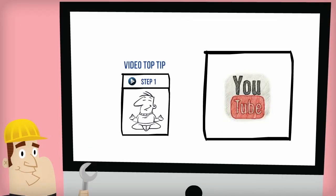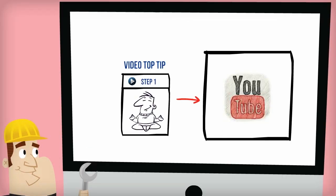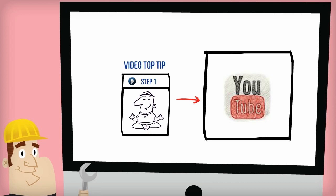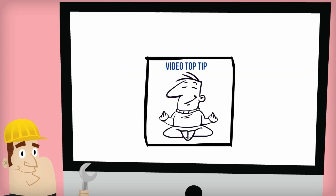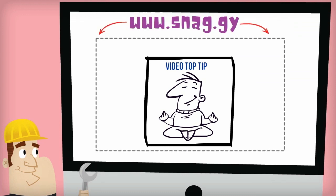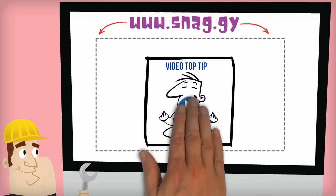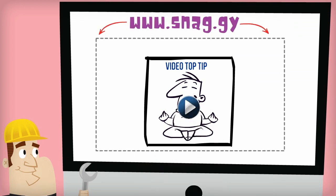Post your video to your website or YouTube. Then take a screenshot of the video using one of the free tools out there — I use Snaggy for this. Take the screenshot of the video and slap a play button right in the centre of it. You can do this with any imaging software and even Microsoft Word.